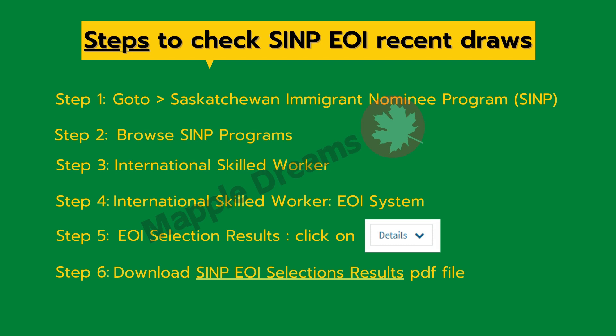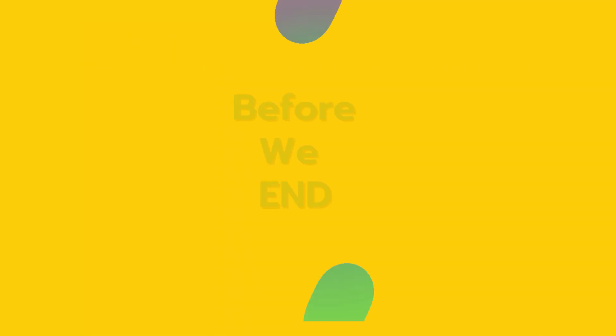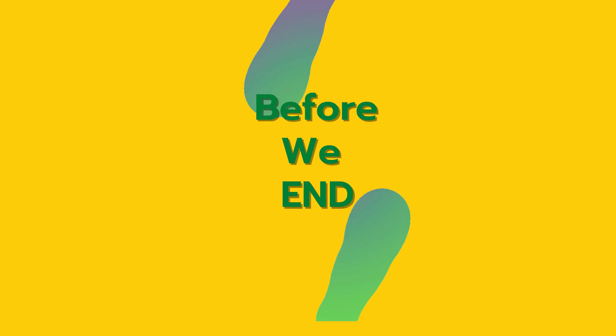For your reference, you can check the latest SINP draw by following the steps shown. The downloaded PDF will give you detailed information of all current and previous draws conducted by SINP. Many people ask about chances of getting a nomination below 70 points. I don't want to discourage you, but the list is in front of you and you can see the current trends. As I always say, never lose hope — it's always good to have a profile in the pool, as no one knows when SINP draw points may drop and you may get a golden, once-in-a-lifetime chance.